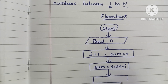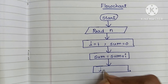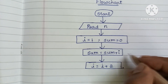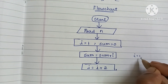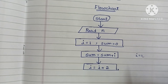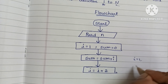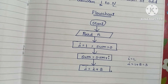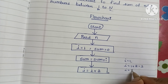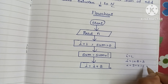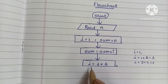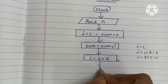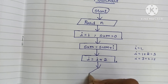Next we have to increment i by 2: i = i + 2. Initially i is equal to 1, which is an odd number. The next odd number is 3, so we add 1 + 2 = 3. Then i = 3 + 2 = 5, which is also an odd number. So we add i = i + 2 each time.